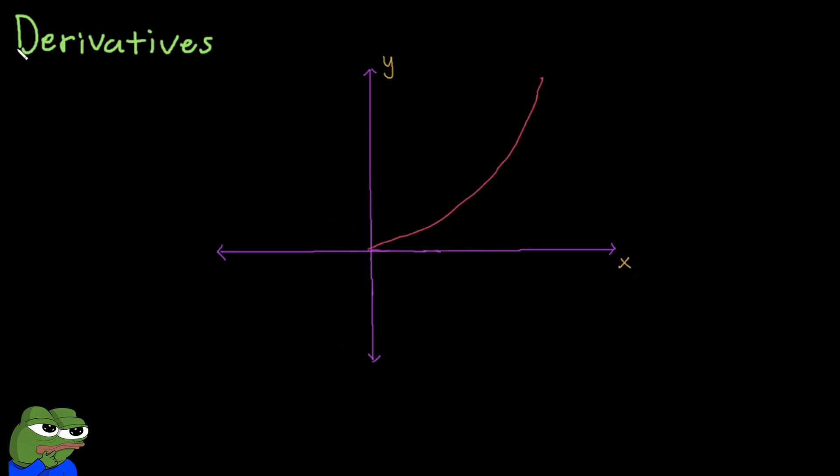But what if we're faced with a curve this time? A curve function is a little bit more tricky because yes, you could still do rise over run, but this would actually give you the average rate of change or the average slope.